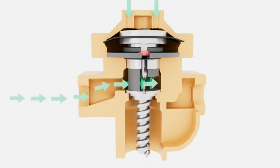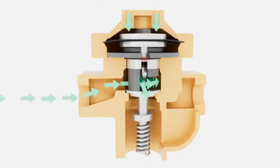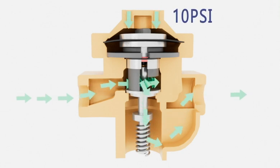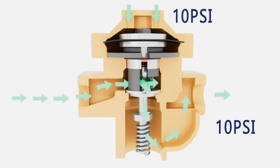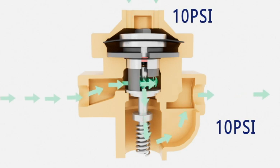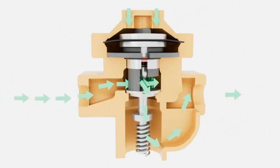Applying air pressure to the dome will then push the plug down off of the seat, allowing air to flow through the regulator at a one-to-one ratio. For example, if you put 10 PSI on the dome, you will see approximately 10 PSI on the downstream side of the regulator or P2.